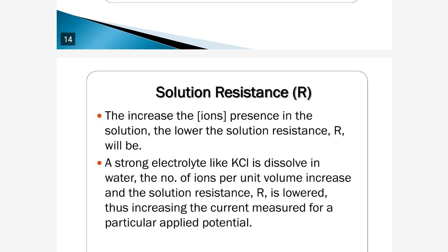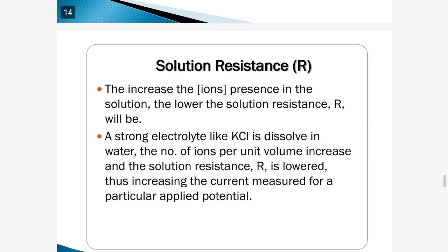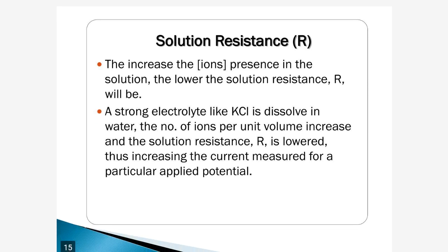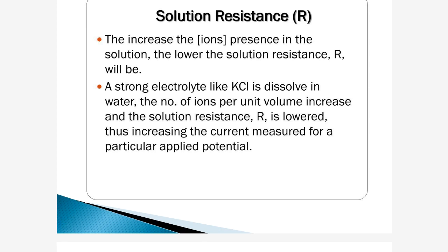Solution resistance has the symbol R. As the number of ions present in a solution increases, the lower the solution resistance R will be. For example, when a strong electrolyte like KCl is dissolved in water, the number of ions per unit volume increases and solution resistance R decreases. As concentration increases, R is lower, thus increasing the current measured for a particular applied potential.